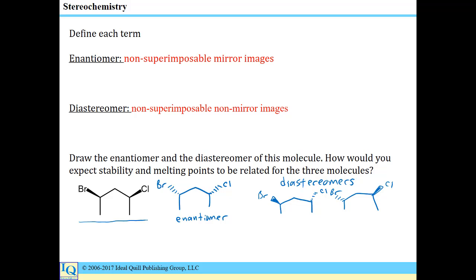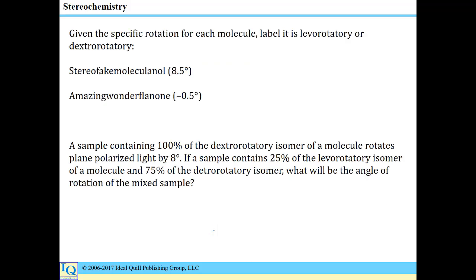How do we expect the stability and melting points to be related for these molecules? Two enantiomers have the same stability and the same boiling points as one another. But either of those two enantiomers will have a different stability, a different boiling point, and a different melting point from the other diastereomers.